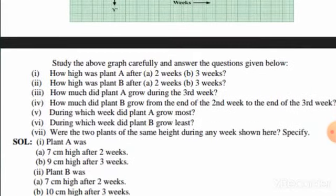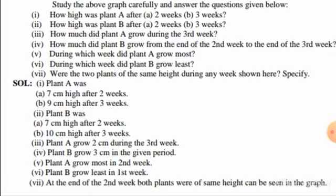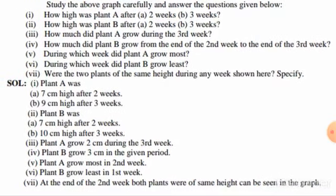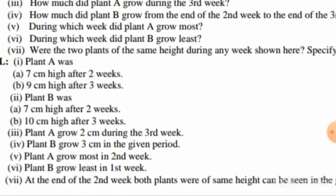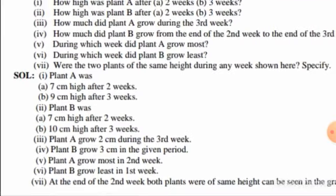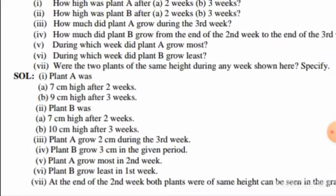In part (c), how much did plant A grow during the third week? Plant A grew 2 centimeters during the third week. In part (d), how much did plant B grow from the end of the second week to the end of the third week? Plant B grew 3 centimeters in that period. In part (e), during which week did plant A grow most? Plant A grew most in the second week.